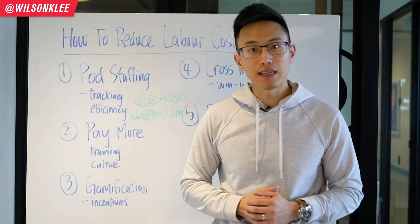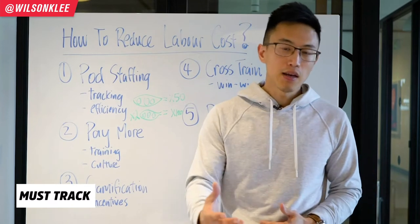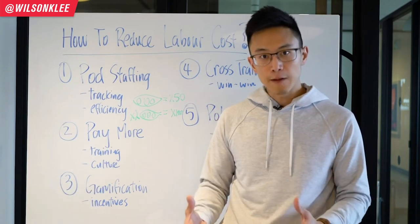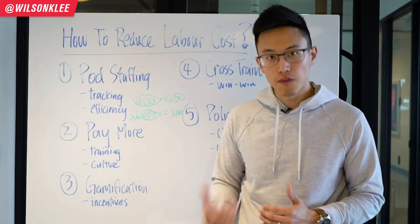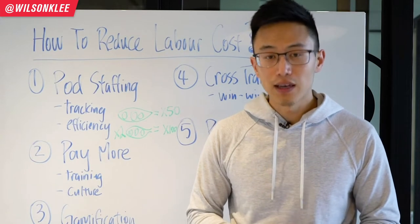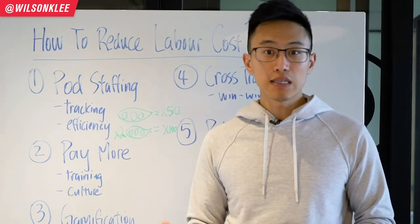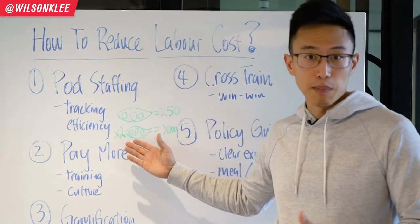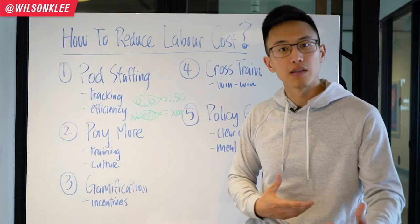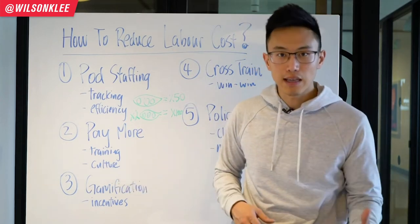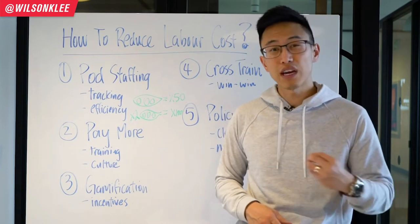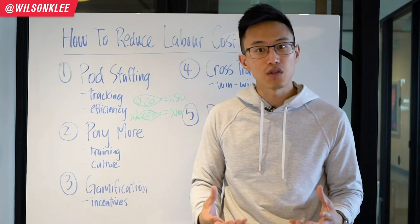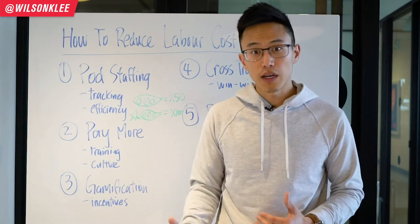To implement pod staffing, you need to track the number of people coming in and how many employees you have on site at one time, so you can draw patterns and see how many people you need to fulfill your capacity. Once you've identified that number, it becomes much easier to do proper scheduling, stagger shifting, and make sure that for busy days you have 1.5, 2, or even 3 pods, and for slow Mondays and Tuesdays, you put your minimal pod — budgeting your staffing accordingly to sales.